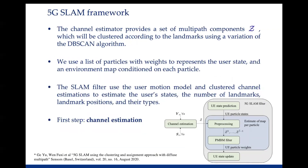In order to use the received safety signal to localize the user and reconstruct the map of the environment, we basically need to follow this framework. We do channel estimation on the received signal to obtain delays and angles. Because each landmark could give more than one measurement, we need to group the delays and angles based on their sources. Here we use a variation of the DBSCAN algorithm to cluster those measurements according to landmarks. Then we follow the Rao-Blackwellized method, using a list of particles with weights to represent the user states, with a map of the environment conditioned on each particle. Every time step, the SLAM filter uses the motion model, channel estimations, and likelihood computations to estimate the user state, number of landmarks, landmark positions, and layer types.